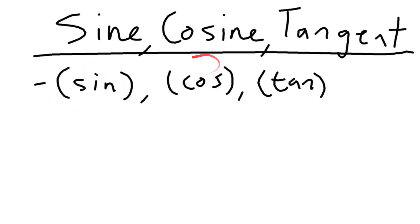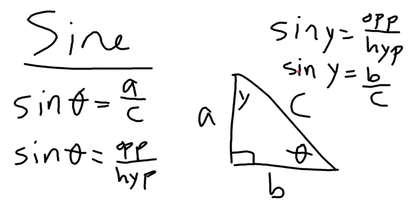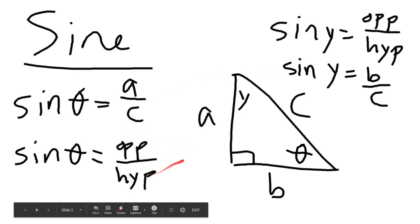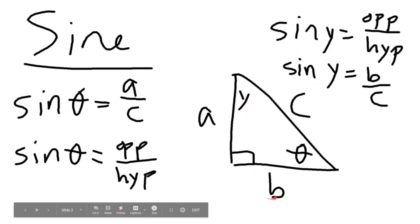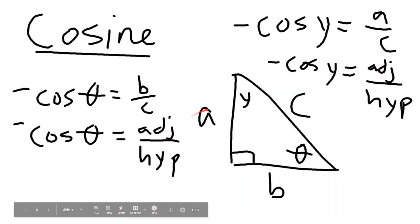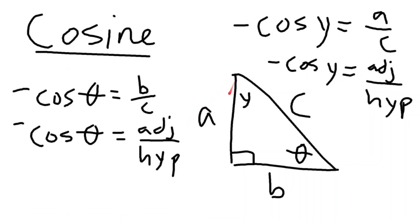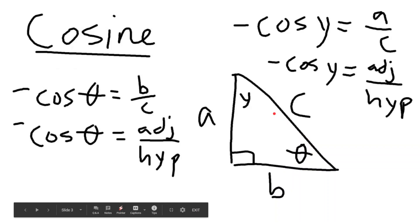The basics include sine, cosine, and tangent. Sine is opposite over hypotenuse. So if we have a triangle with sides a, b, and c, and we're trying to find sine of theta, that's a over c. Sine of y is opposite, which is b, over hypotenuse, which is c — so sine y equals b over c.